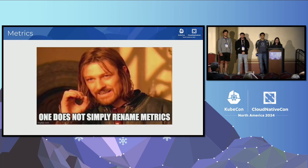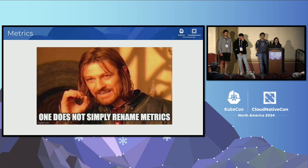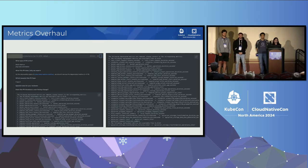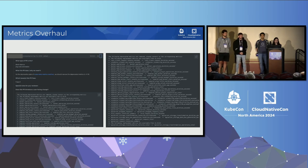One lesson we try to reinforce every year is that one does not simply rename metrics. Years ago, we had a metrics overhaul project where we were trying to bring existing Kubernetes metrics in line with the Prometheus standard, and in that process we ended up renaming a bunch of metrics. When you rename a metric, the old metric ceases to exist and you create a new one. Whoever depended on the original metric for their dashboards and alerts found those stopped working — essentially breaking monitoring for a ton of users.